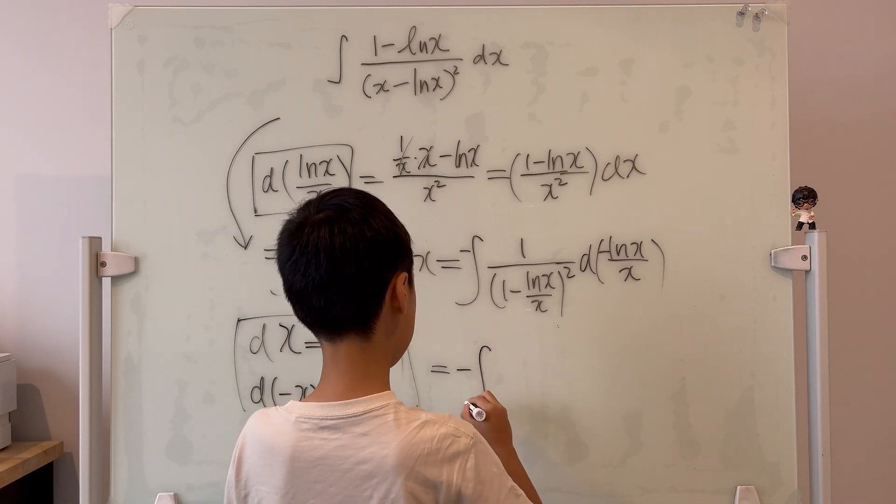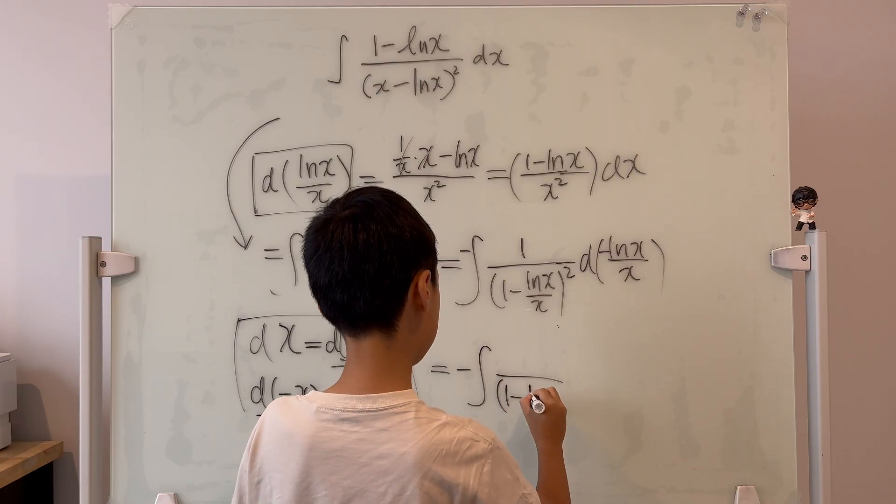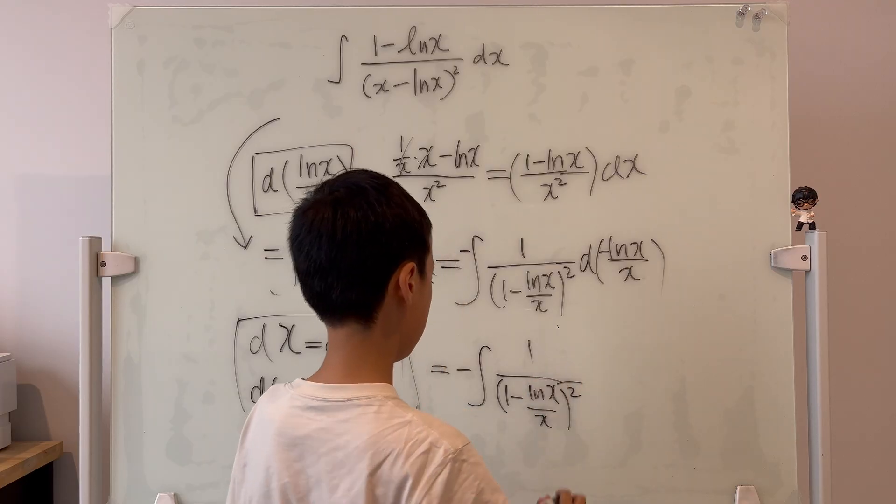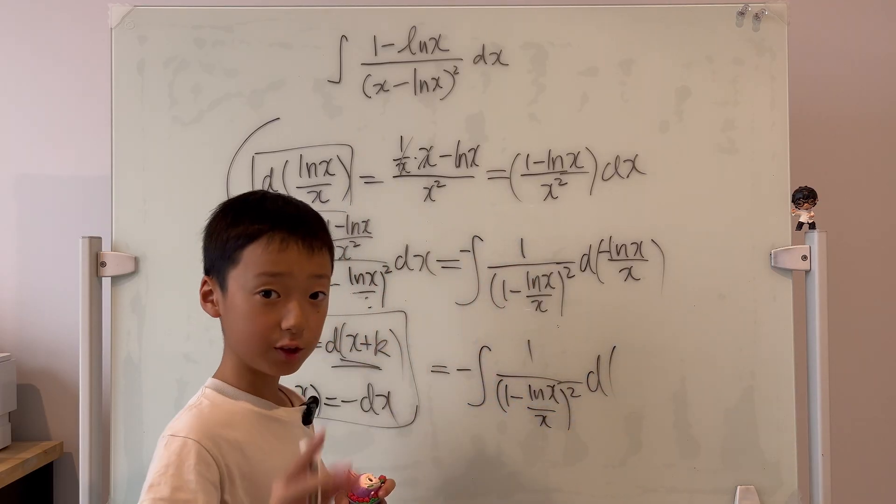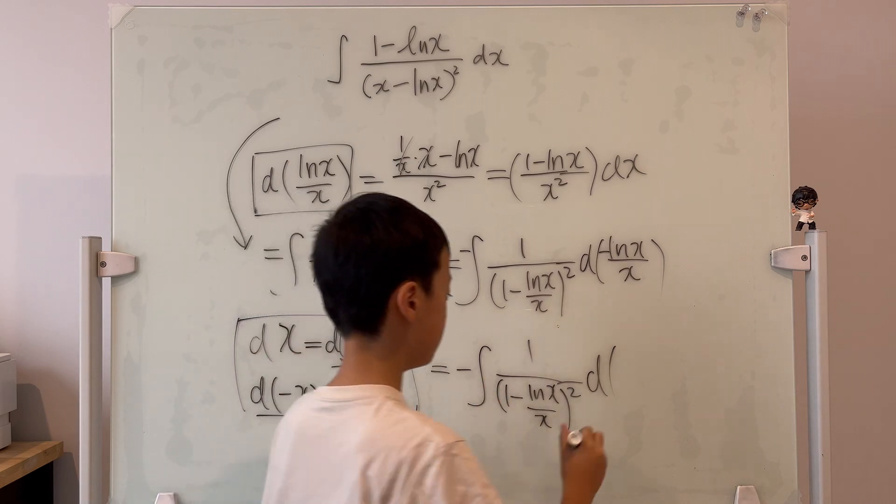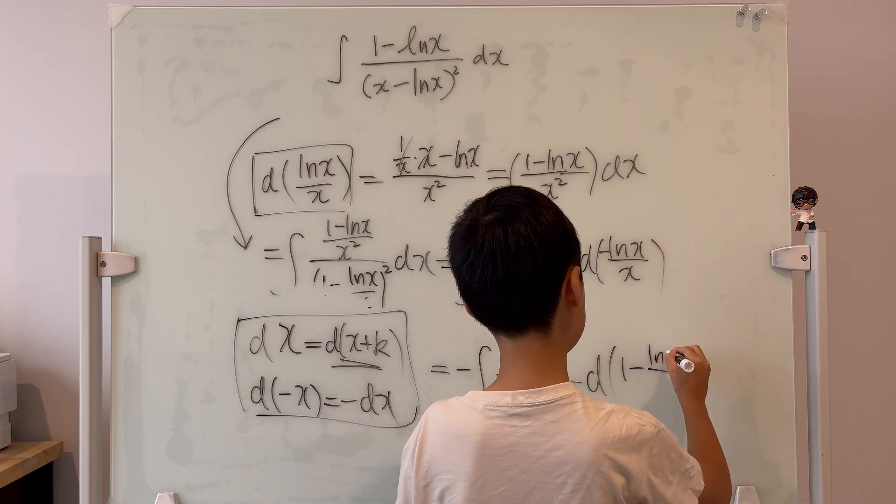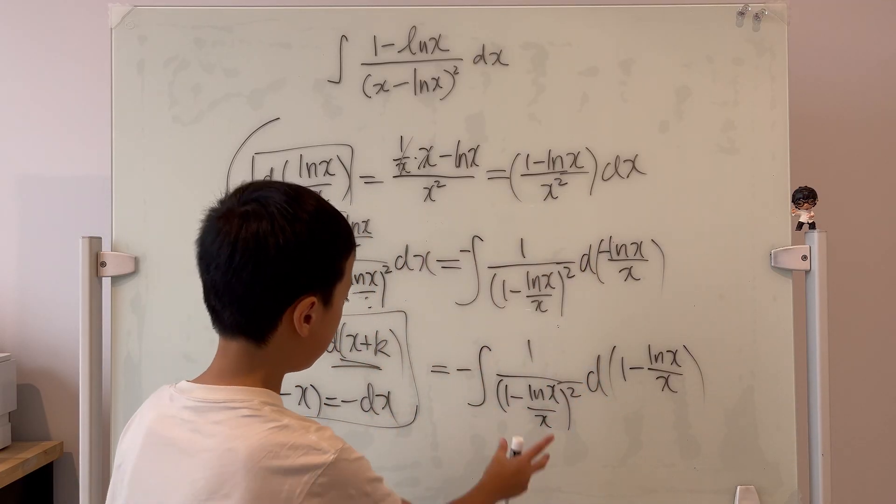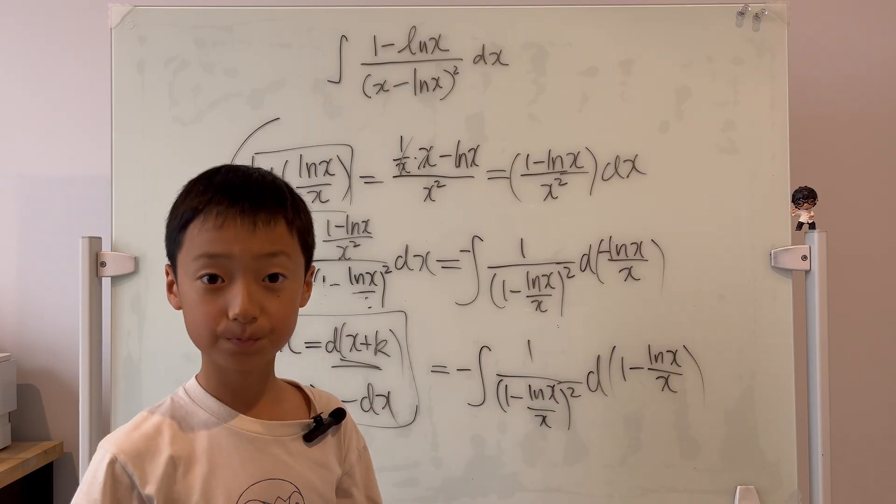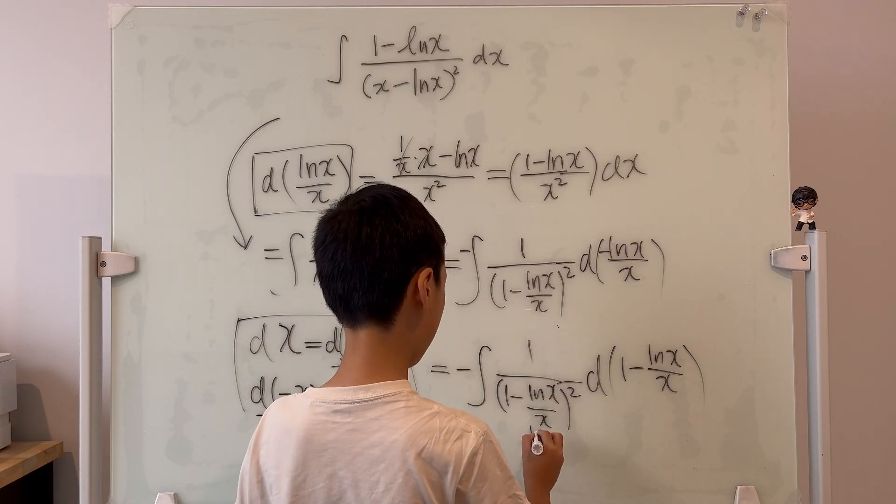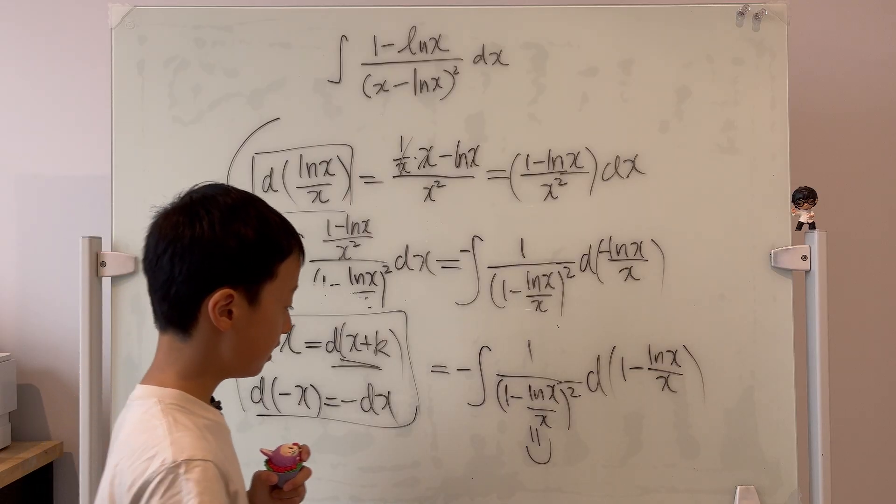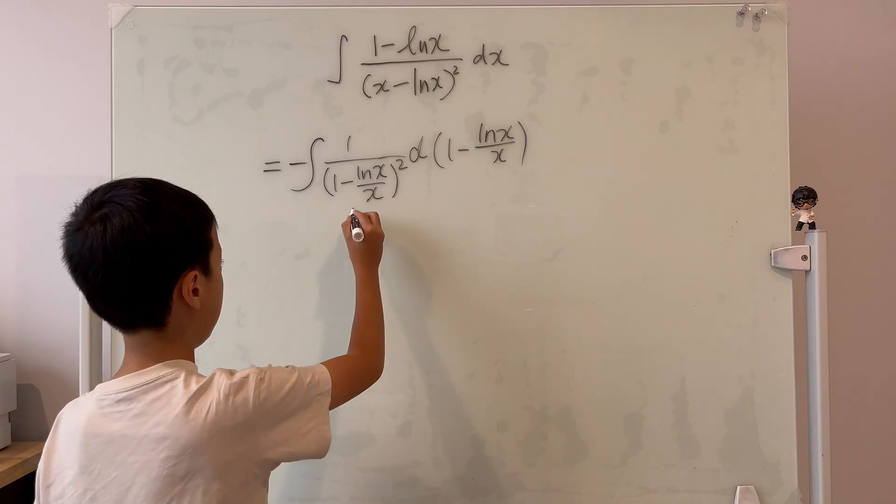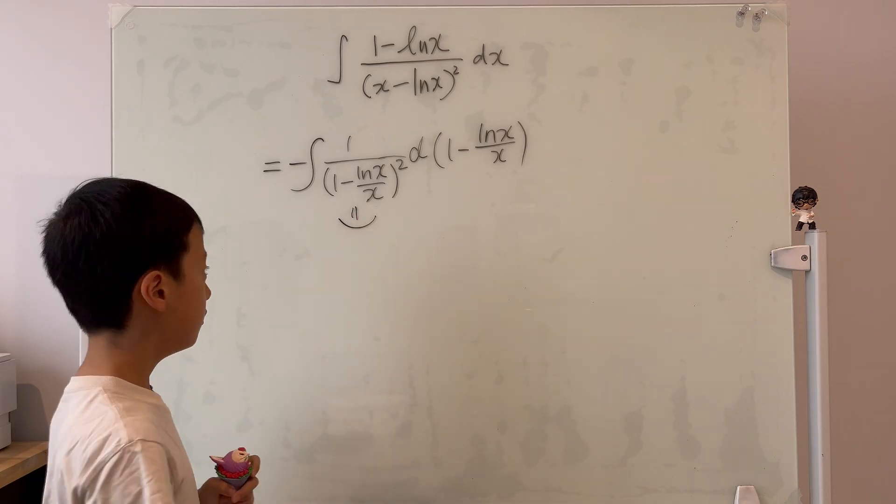So it's equal to negative integral of, this bottom being the same. And then, d, we add the 1, put the 1 to the front. So it's 1 minus ln x over x. And now, the moment of truth. Is this the same as this? Yes. So we can let the whole bottom be my smiley face. You see, my smiley face is happier than ever now. Look at his grin.